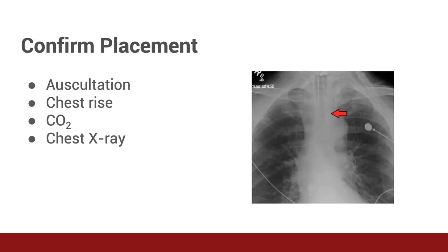There are multiple ways to confirm proper placement of the endotracheal tube. As shown in the video, the first is to auscultate both sides of the chest and the upper abdomen to confirm bilateral breath sounds and no sounds of air insufflating the stomach. You should also visualize equal chest rise. If the tube has been advanced too far, it may have cannulated the right bronchus. If you hear lung sounds on the right but not the left, pull back on the endotracheal tube until you hear breath sounds on both sides.